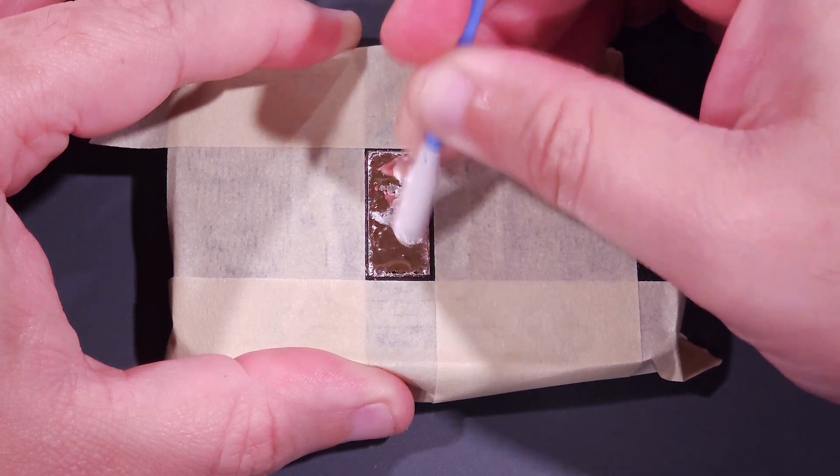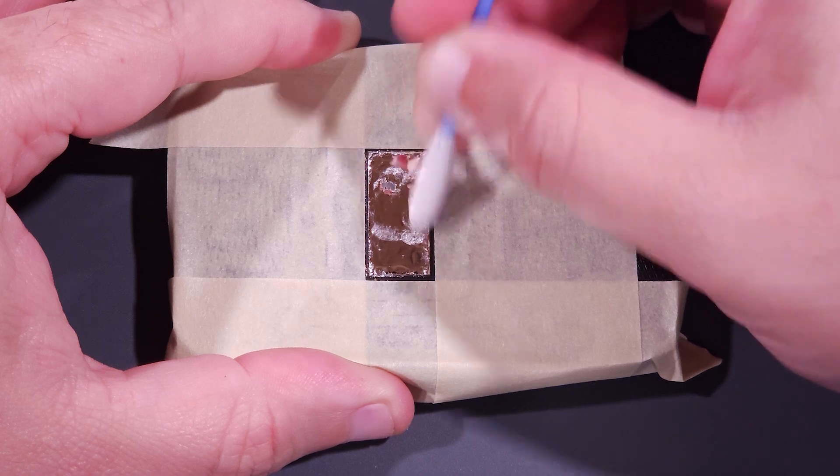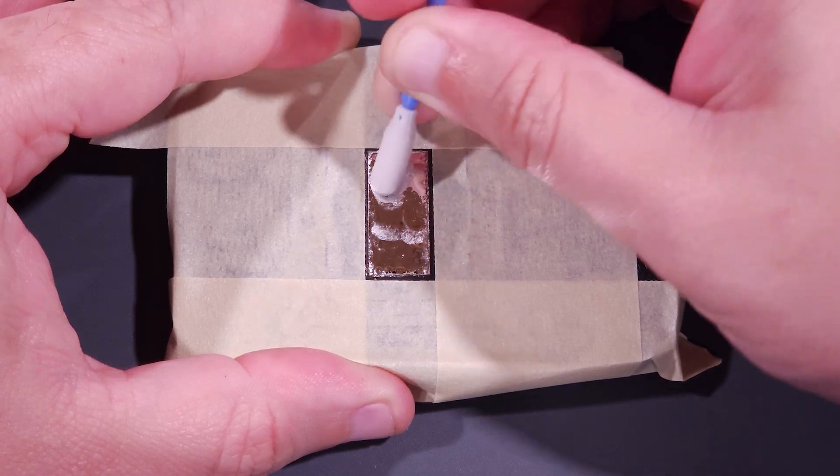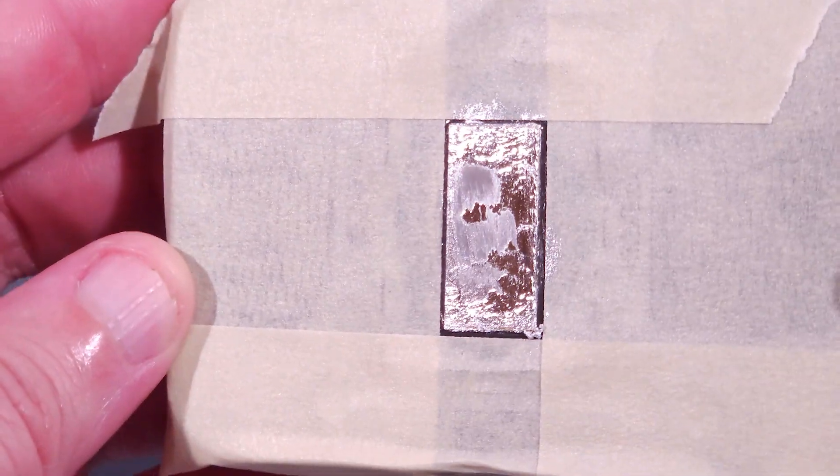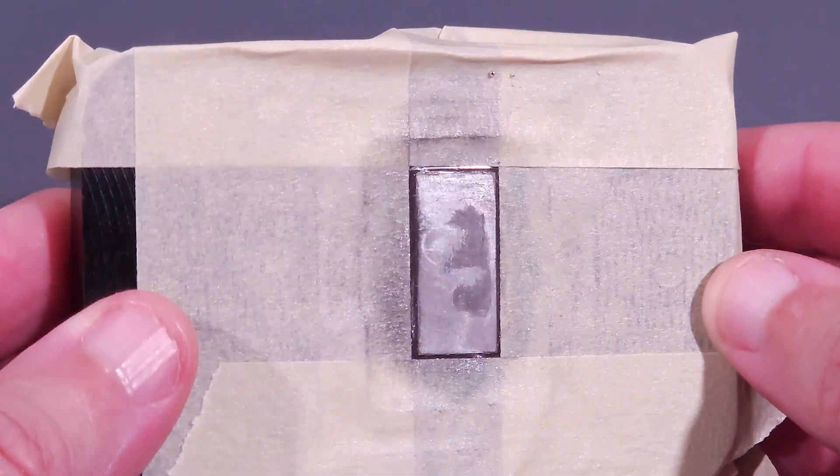If there's still solder after cleaning, I'll repeat these steps until no more indium remains. Sometimes it just takes two or three passes using this method. At this point, the CPU looks like this. After a second pass, it looks like this.